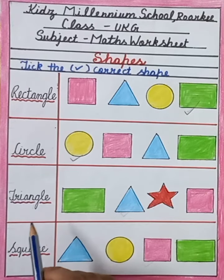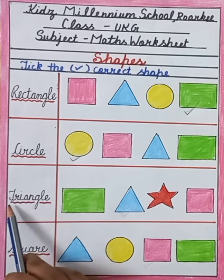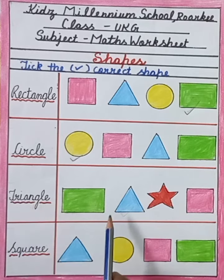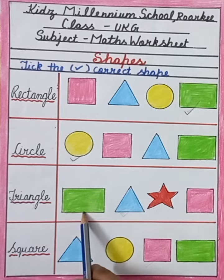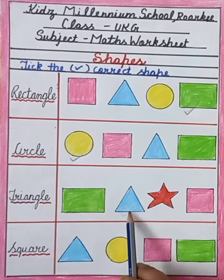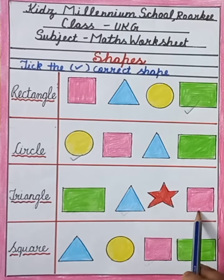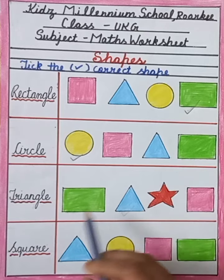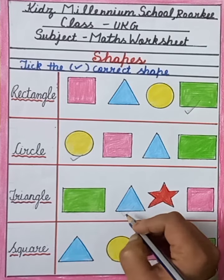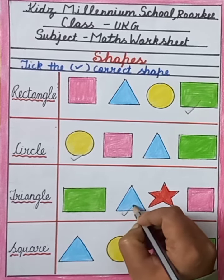Now my dear kids, next is triangle. So here is triangle, and square. So the correct one is triangle. So we will tick it like this.